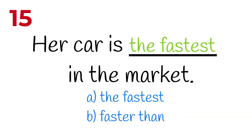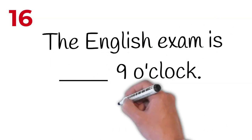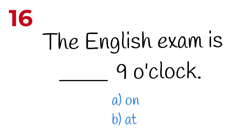Her car is the fastest in the market. Se trata de un superlativo. En esta ocasión no estamos comparando dos coches, estamos indicando cuál es el más rápido del mercado. The English exam is at nine o'clock. Cuidado con las preposiciones 'in', 'on' y 'at'. Cuando hablamos de momentos concretos, como en este caso una hora, usamos 'at'.